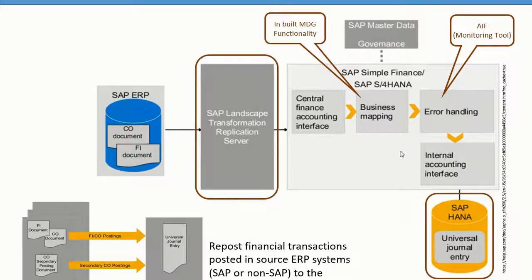In the central finance system, you have a business mapping functionality provided as standard — it's an MDG (Master Data Governance) functionality built into central finance. It doesn't provide all master data governance functions, but it gives you a robust mapping functionality. Central finance also provides mapping functions for short-lived as well as long-lived objects.